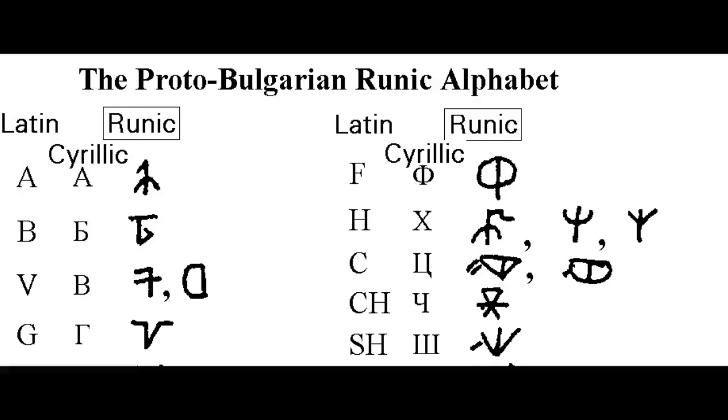The writing system for the Chuvash language is based on the Cyrillic script, employing all of the letters used in the Russian alphabet and adding four letters of its own.